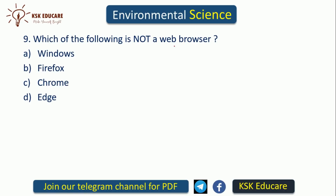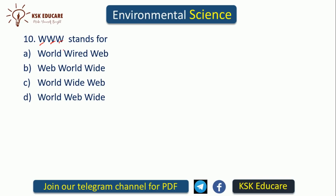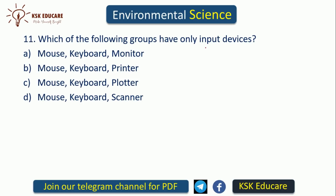Which of the following is NOT a web browser? Windows is not a web browser — it is an operating system. Firefox, Google Chrome, and Microsoft Edge are web browsers. Which group has only input devices? Mouse and keyboard are input devices; monitor is an output device.